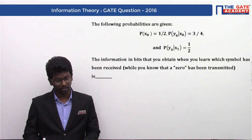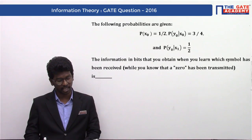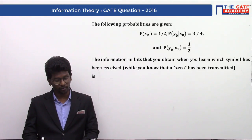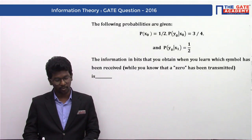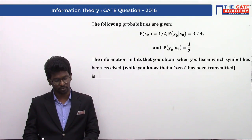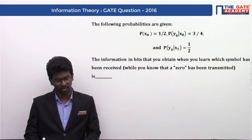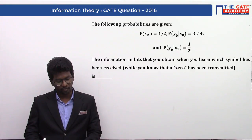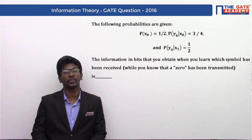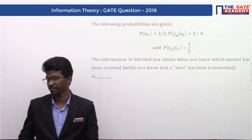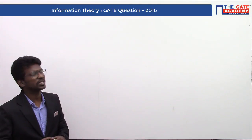The following probabilities are given: probability of x0 equals 1/2, probability of y0 given x0 equals 3/4, and probability of y0 given x1 is 1/2. The question asks for the information in bits that you obtain when you learn which symbol has been received, given that x0 has been transmitted.